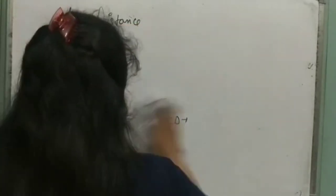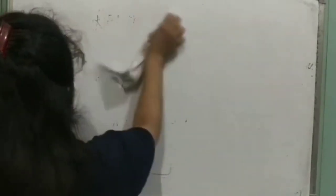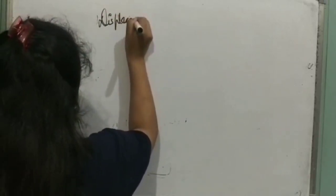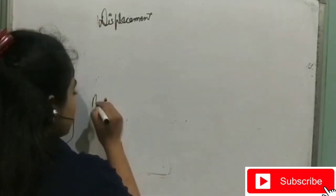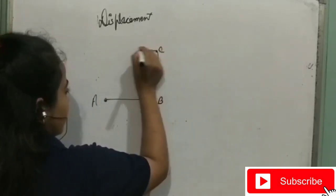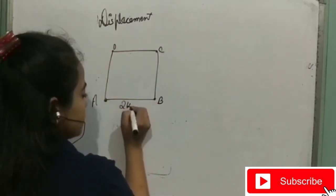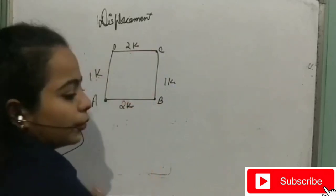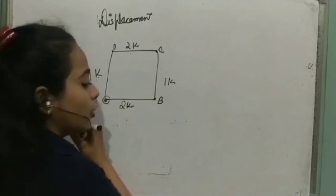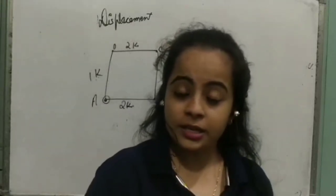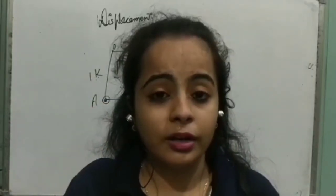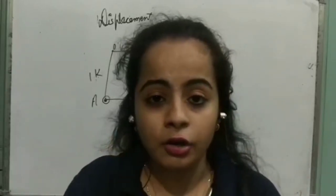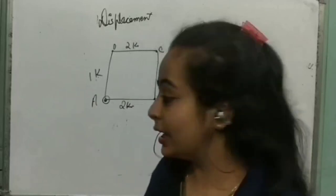Now displacement. Displacement means shortest distance — the shortest distance between the initial and final point. Direction also matters in displacement. Let's take an example: suppose I am standing at A, I move through B, C, D, and come back to A. Since I started and ended at the same point A, the shortest distance covered is 0 km — so displacement is 0.